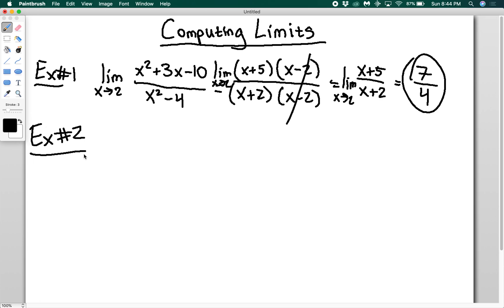Let's look at another one. Example two: the limit as x goes to 4 of x minus 4 over the square root of x minus 2.